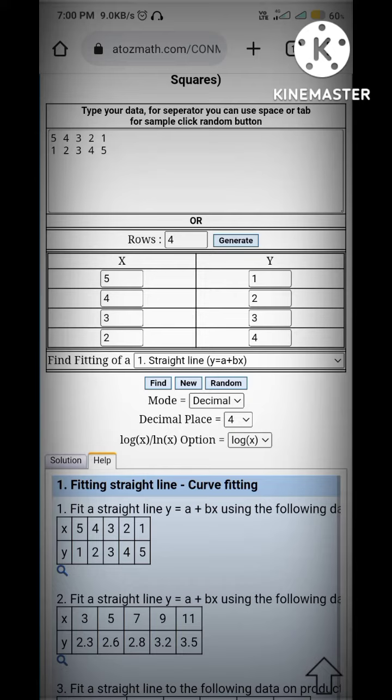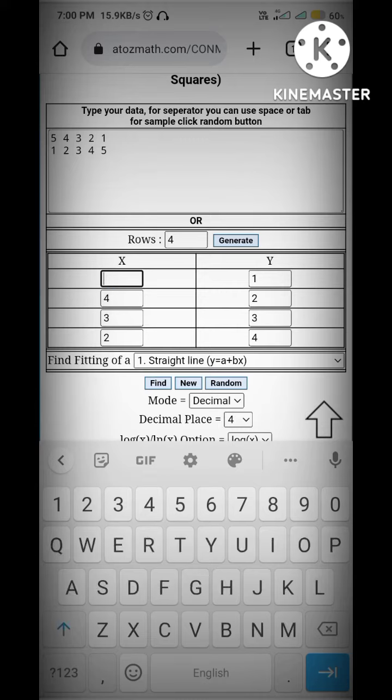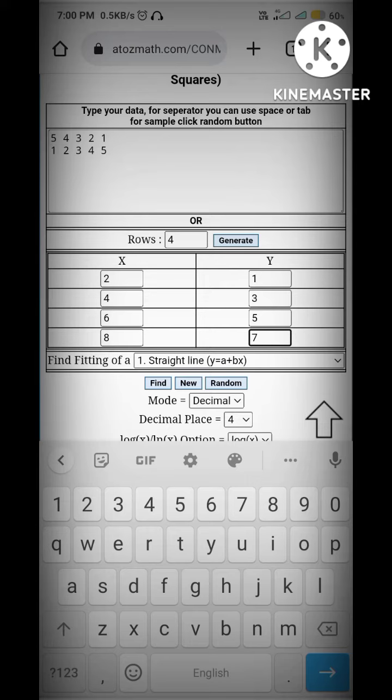And press on generate. It will generate and then enter the data after selecting the rows. Enter the value of X and enter the value of Y respectively.